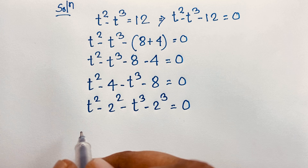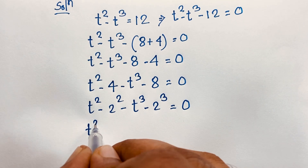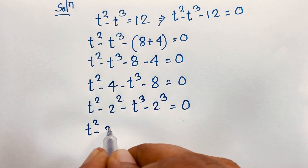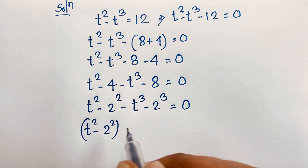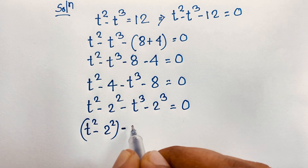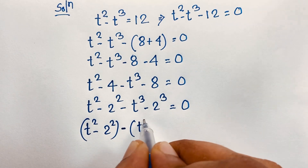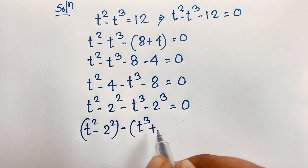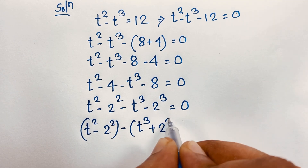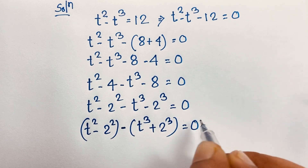Now, you can see it will be t to the power 2 minus 2 to the power 2 in a bracket, and if we take negative sign as common, it will be t to the power 3 plus 2 to the power 3 is equal to 0 — because minus minus becomes plus.